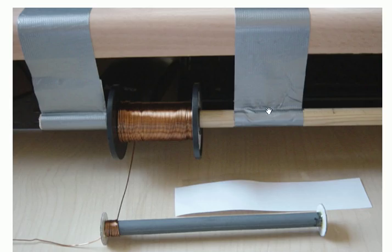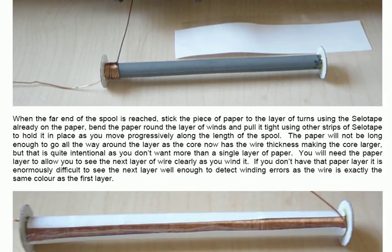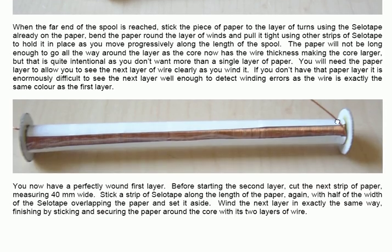This is a desk, and duct tape has been used to suspend a dowel rod, on which is sitting the reel of wire supplied by the supplier. This is the 140 mm wide strip of paper, and this is the sellotape strip along its length. The start of the winding is shown here, and it gets pushed in tight before you take it further than it is at the moment. This is a very effective way of winding the coil itself. When the far end of the spool is reached with the windings, you then stick the piece of paper to the layer of turns, using the sellotape which is already on the paper. Bend the paper around the layer of winds, and pull it tight, using other strips of sellotape, pulled in this direction, across the width of the coil.